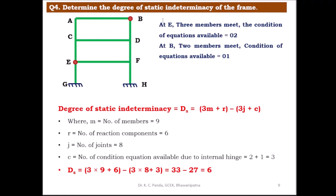Coming to the fourth example: determine the degree of static indeterminacy. Supports G and H are both fixed. At joint B there is one internal hinge where 2 members meet, giving 1 condition equation. At joint E there is a second internal hinge where 3 members meet, giving 3 − 1 = 2 condition equations. The total number of condition equations c = 2 + 1 = 3.